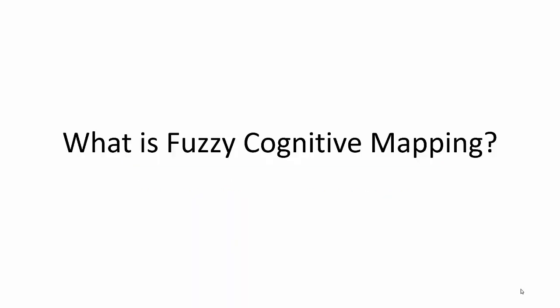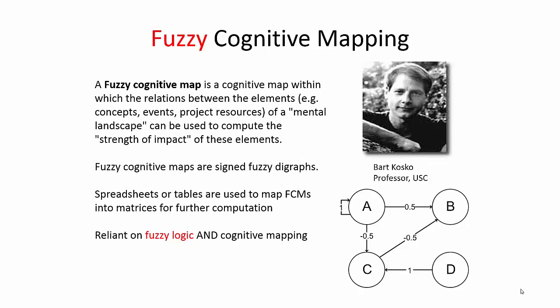This one is the most basic. Because Mental Modeler is based in fuzzy cognitive mapping, this first video covers: what is fuzzy cognitive mapping? Fuzzy cognitive mapping was invented by a guy named Bart Kosko, who's a professor at University of Southern California, who really came from more of a computer science background.